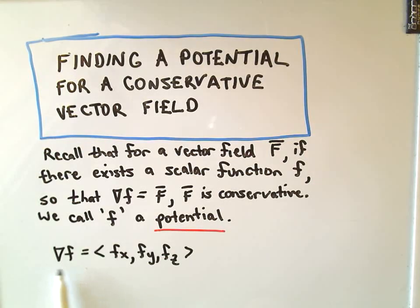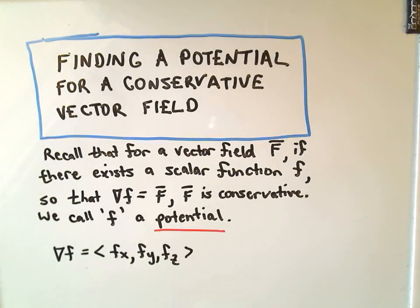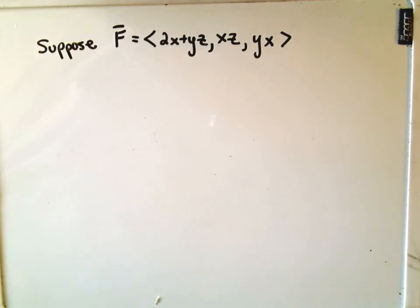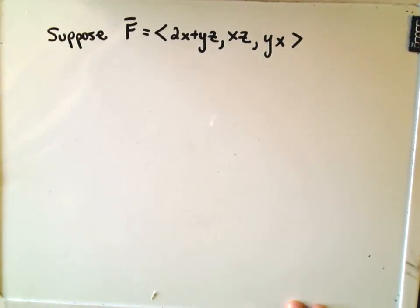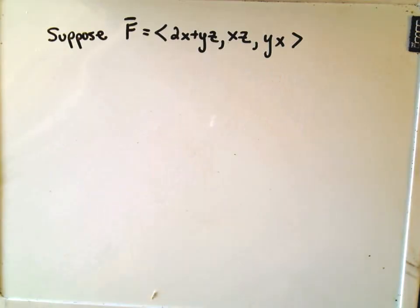Recall that the gradient of f is just the partial with respect to x, y, and z. So suppose we've got this vector field here: 2x plus yz, xz, and yx.